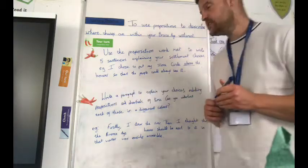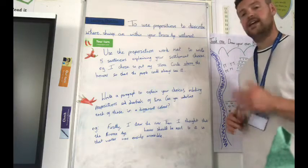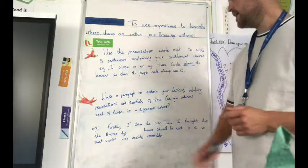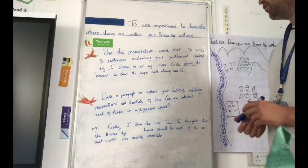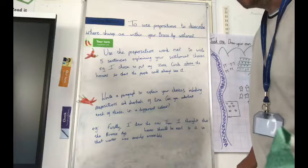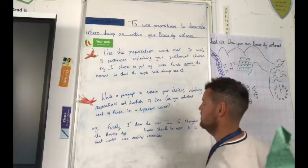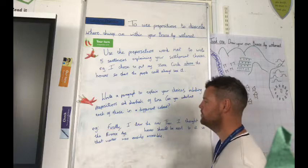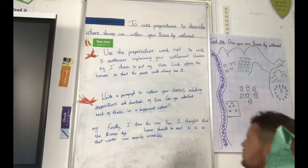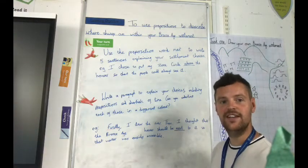Chilly three, your challenge is to write a paragraph to explain your choices, including prepositions and adverbials of time. Can you underline each of these in a different colour? So, my example down here would be, firstly, I drew the river. Then, I thought that the Bronze Age houses should be next to it so that water was easily accessible. I've also got a preposition in there, and I'm going to use purple for that one. Good luck. Can't wait to see the results. Off you go.